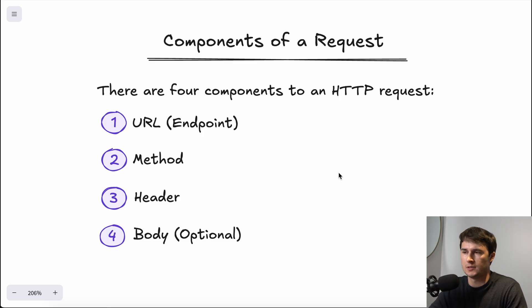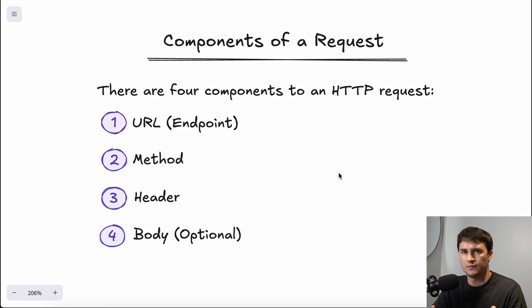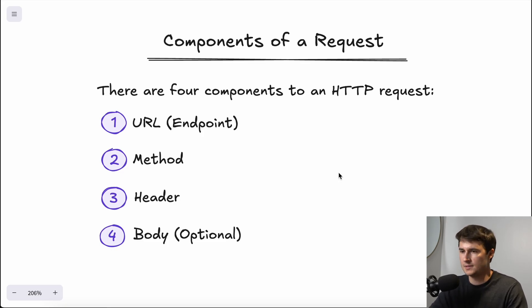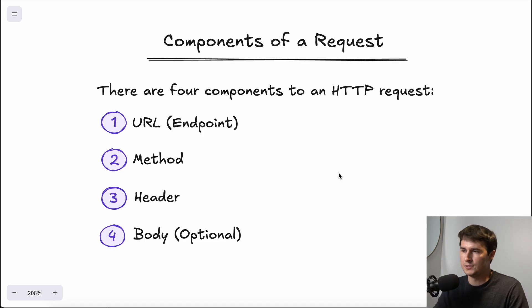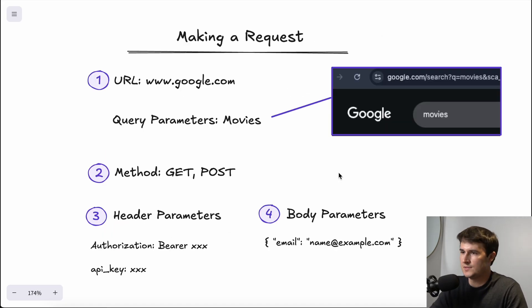Now let's talk about the components of an HTTP request node. There are four components to an HTTP request: the URL or endpoint, the method, the header, and the body — which is optional.